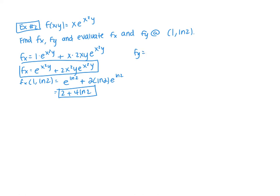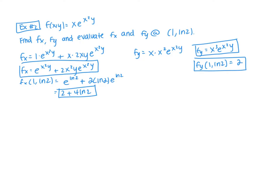So then if we find the first partial with respect to y, remember that x squared — any x — is a constant. So we have e to some constant times y. Using the chain rule, that constant comes down. We already have the x out front; we bring the x squared down and get e to the x squared y. So that becomes x cubed e to the x squared y — that's our first partial with respect to y. If we plug in (1, ln 2), we get 1 times e to the ln 2, which is just 2.